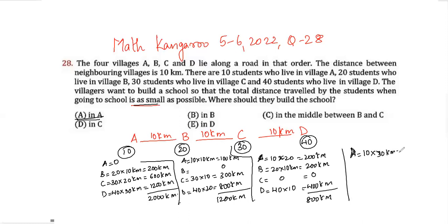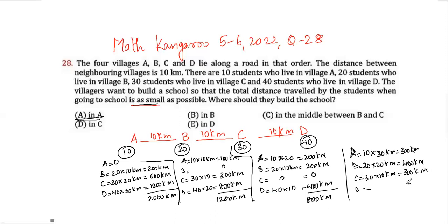And if the school is built at D: 10 students in village A travel 30 kilometers, giving 300 kilometers. 20 students in village B travel 20 kilometers, giving 400 kilometers. 30 students in village C travel 10 kilometers, giving 300 kilometers. Students in D travel 0 kilometers. Total distance traveled is 1000 kilometers.